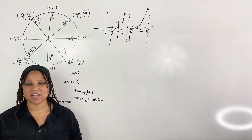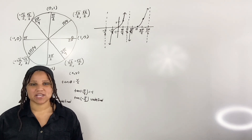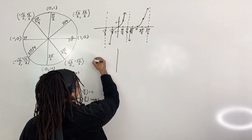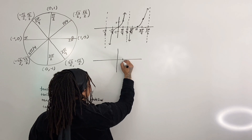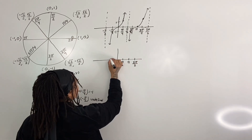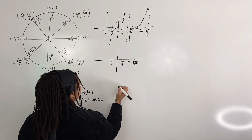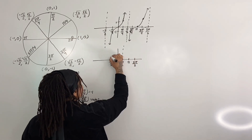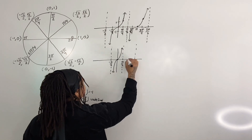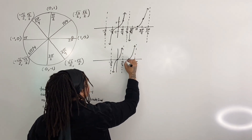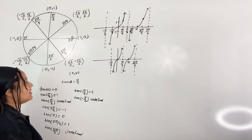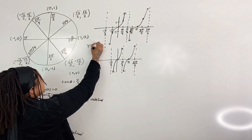Now once you understand the shape of the parent graph of tangent, it is not necessary to plot so many points. All we need to use is the quadrantal angles. So I'm going to regraph this only using quadrantal angles. We have pi over 2, pi, and 3 pi over 2, and here we have negative pi over 2. We have a vertical asymptote at pi over 2, negative pi over 2, and 3 pi over 2, and the graph just swings out like this. And here we have the graph of y equals tangent of x.